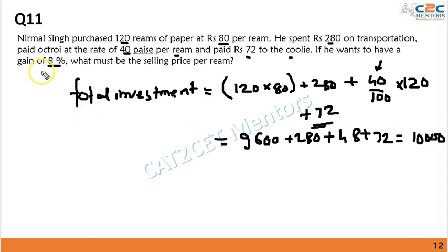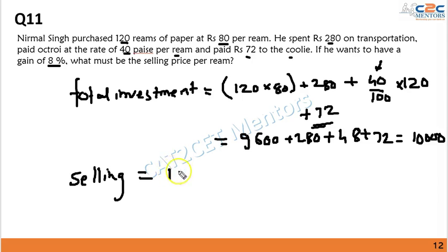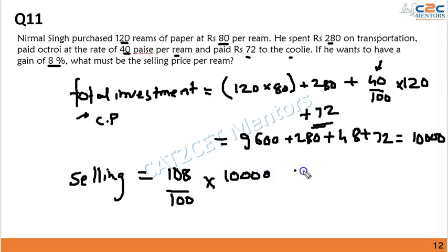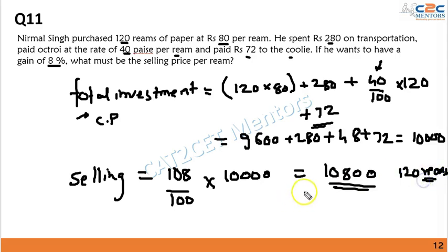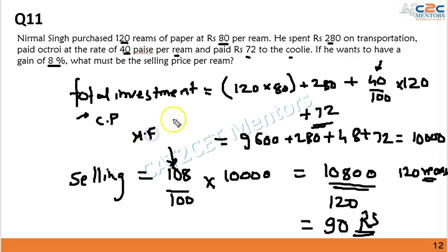He needs a gain of 8%, so the selling price must be 8% more than the cost price. Using the multiplication factor: 108/100 × 10,000 = 10,800 rupees. This is the selling price for 120 rims. Dividing by 120 gives the price per rim as 90 rupees. The multiplication factor for 8% profit is 1.08.